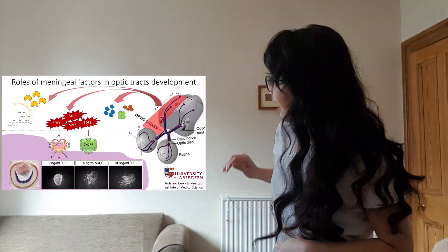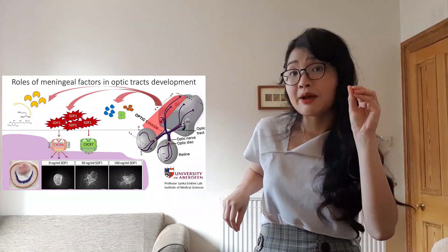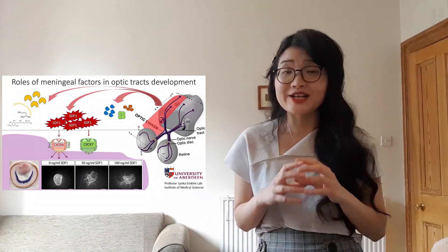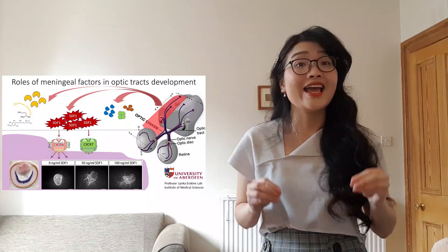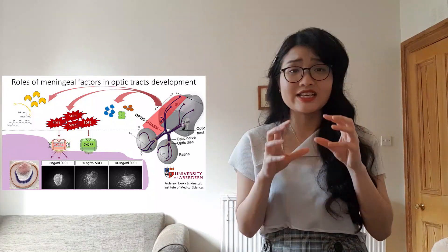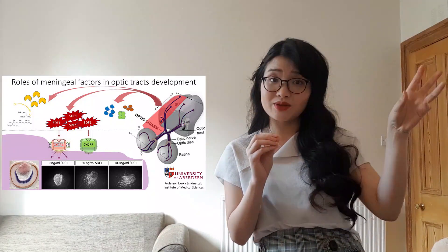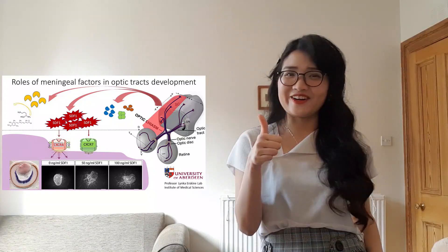Looking at the eye image here, the purple staining marks out the expression of the receptors in the exact group of cells in the eye that are going to send axons to the brain. So that's a good start.